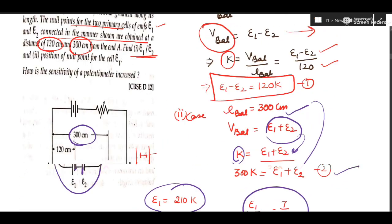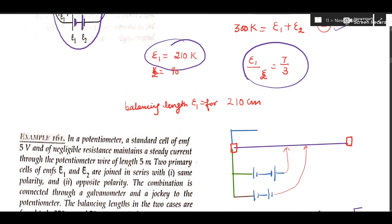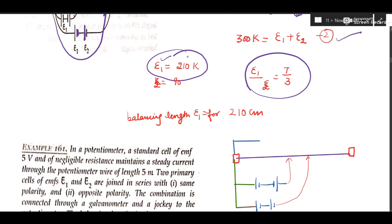Solving the two linear equations gives E1 and E2, and the ratio E1/E2 = 7/3. Additionally, they ask for the position of the null point for cell E1 alone. The value of E1 is obtained from the solution, and using K = V_balanced / L_balanced, cell E1 is found to be balanced against a length of 210 centimeter.